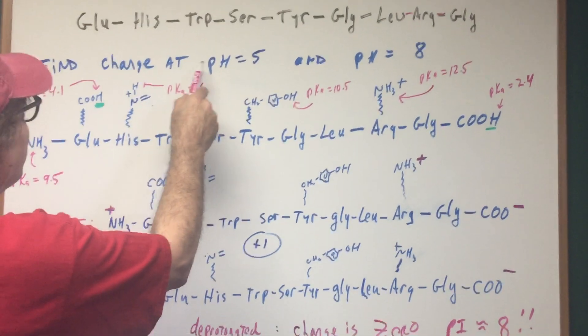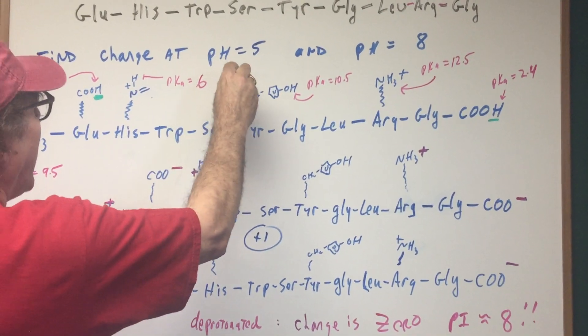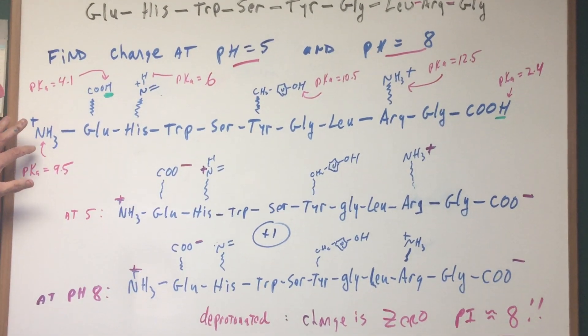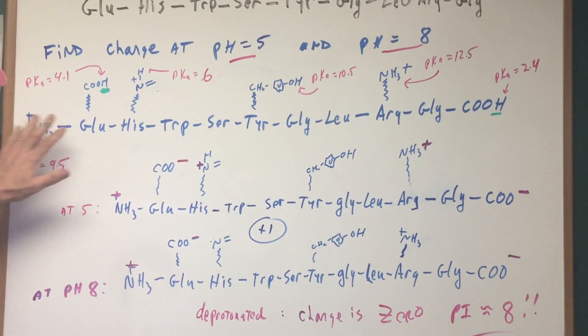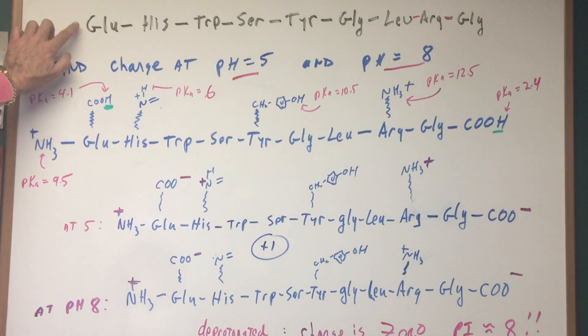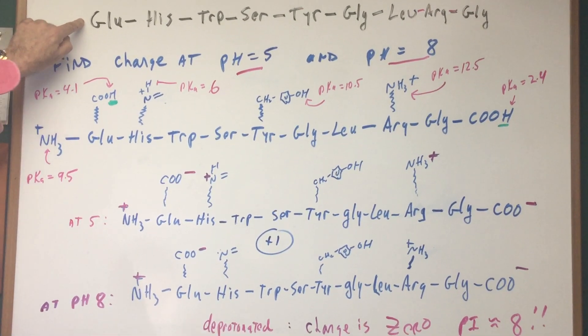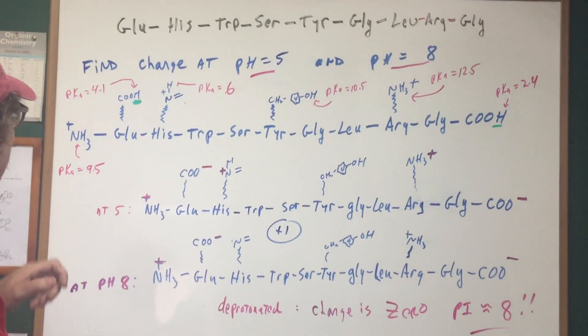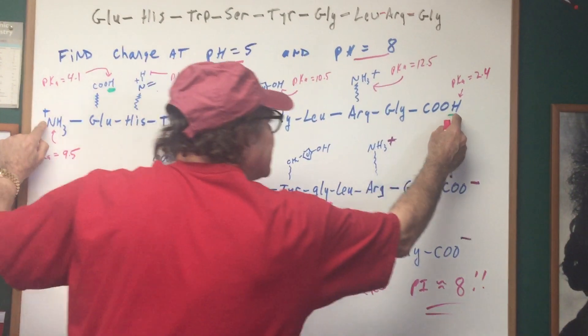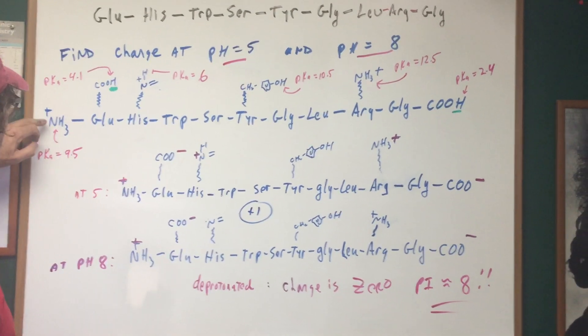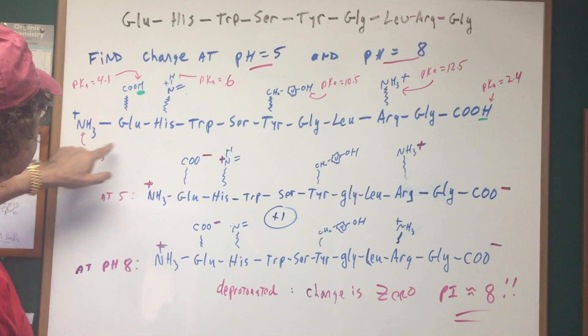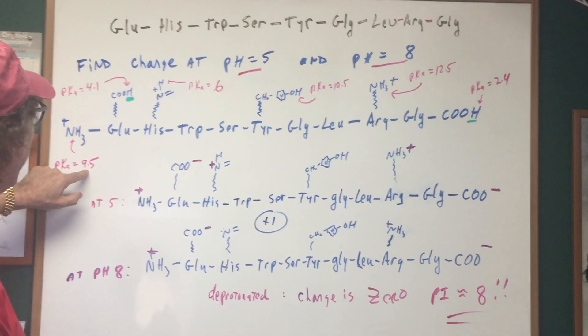Now, what I want to do is I want to find a charge on this nonapeptide at a pH of five and at a pH of eight. The first thing I do is I give you the PKA values of all the species that need addressing. The left side is always the N-terminal and the right side is always the C-terminal. So I'm going to put an NH3 plus on the left side and a COOH on the right side. The amino group of the alpha amino group of glutamic acid has a PKA of approximately 9.5.